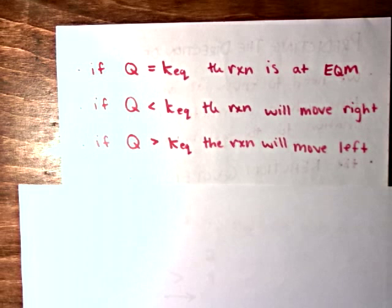It's a little more challenging to understand what it means if Q is greater than or less than K, especially if you're just learning this right now. But what happens is that if Q is less than K, the reaction will move to the right, but if Q is greater than K, the reaction will move to the left.